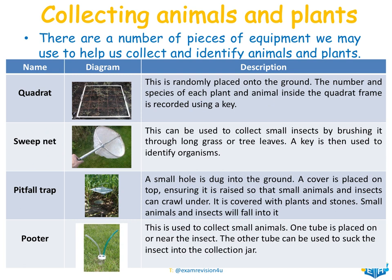The sweep net is used to collect small insects by brushing it through long grass or tree leaves, then a key is used to identify the organisms. A pitfall trap involves digging a small hole in the ground with a cover raised slightly so small animals and insects can crawl under and fall into the trap. The pooter is used to collect small animals: one tube (without gauze) is placed near the insect, and you suck through the other tube (with gauze) to draw the insect into the collection jar.